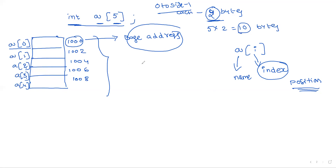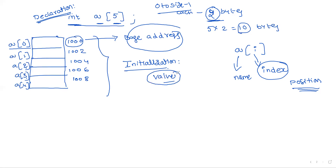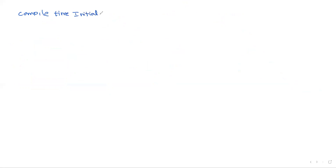This step is called declaration. After declaration comes initialization. Initialization means assigning values to the array after it is declared. If no values are given, garbage values will be stored — that is why we must initialize. There are two types of initialization: compile-time initialization and runtime initialization.